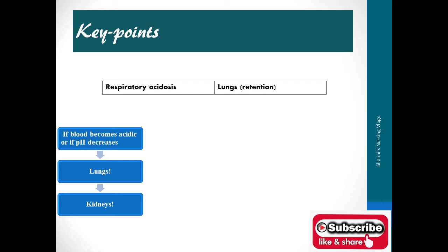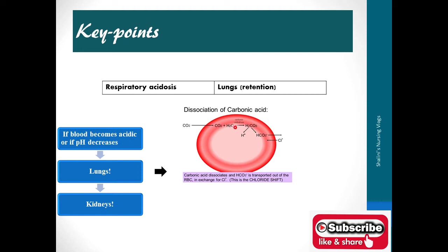The moment you hear respiratory acidosis, immediately think about retention of carbon dioxide inside the lungs. If blood becomes acidic or pH decreases, there is regulation by the lungs and compensation by the kidneys. In the lungs, carbon dioxide combines with water and in the presence of carbonic anhydrase gives rise to carbonic acid. Excess carbon dioxide produces excess carbonic acid, creating a more acidic medium, which later dissociates to protons and bicarbonate.